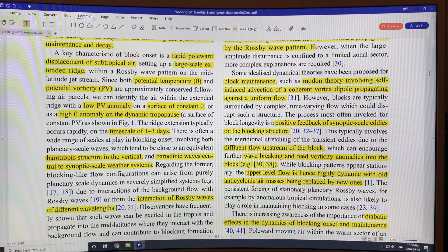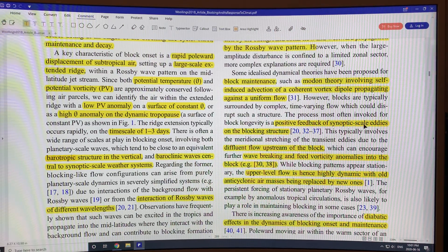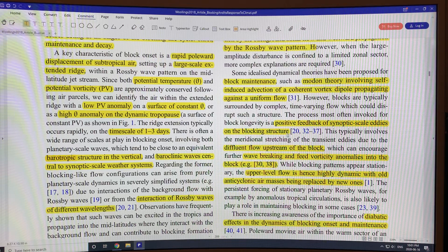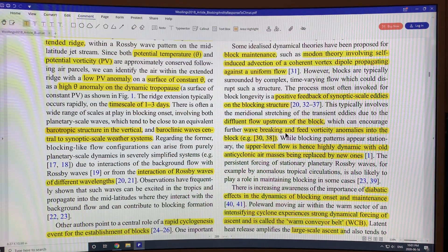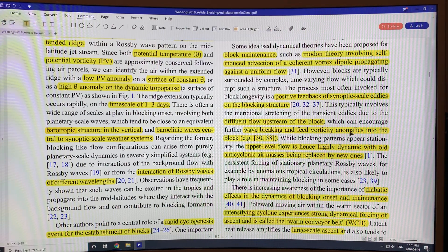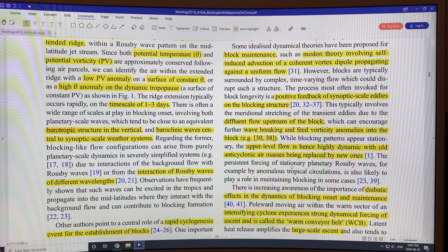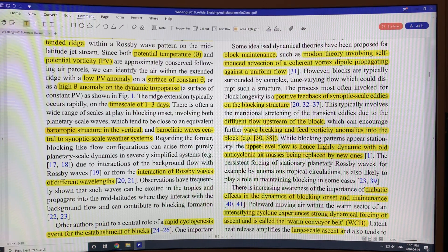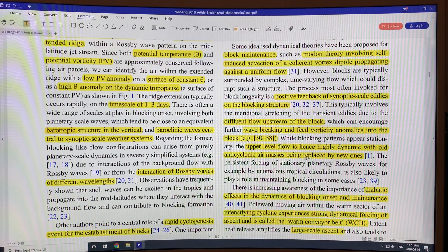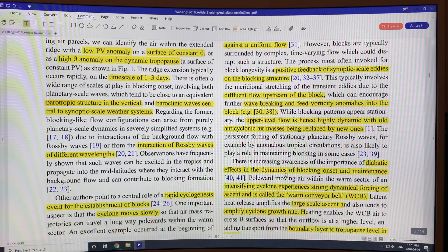The block longevity can be positive feedback of these synoptic weather map scale eddies on the blocking structure. You get wave breaking in some cases, different vorticity anomalies in the block. Although the whole system is somewhat stationary, you get stationary planetary Rossby waves. There's a lot of dynamics within the actual blocking.